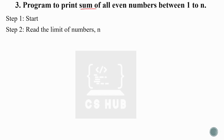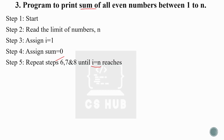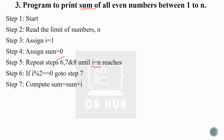Algorithm: Start, then read the limit n. Assign i equal to 1 and also assign sum equal to 0 to initialize it. Then check if i is less than or equal to n. Inside the loop, if i percentage 2 equals 0, then sum equals sum plus i. Otherwise, just increment i. After the loop body, increment i and go back to the condition check.